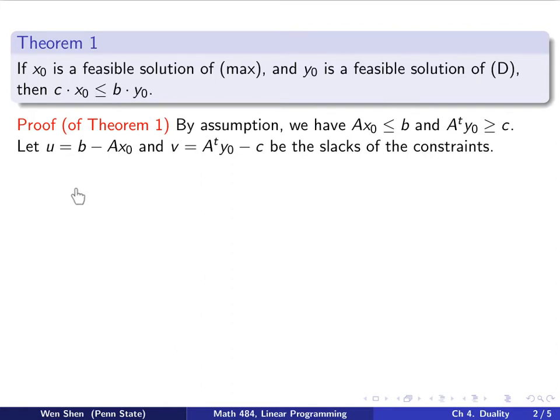Then I can define u and v here to be the slacks of these two constraints. They are both vectors. So u would be b minus Ax0, and v is defined as A transpose y0 minus c.